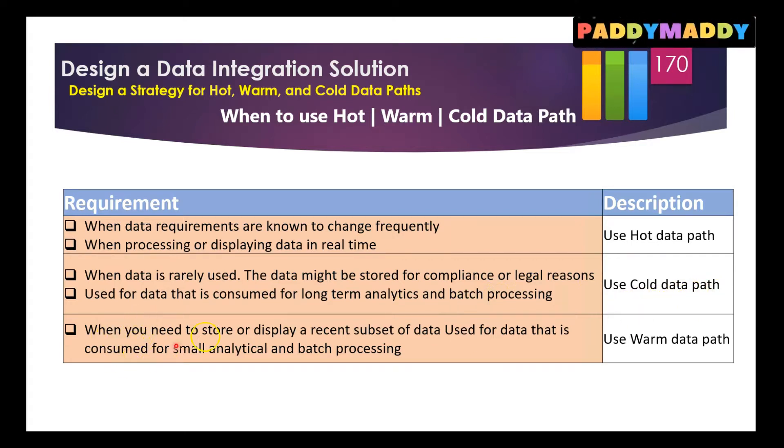When you need to store or display a recent subset of data that's recently used, data that may be consumed for small analytical or batch processing, then warm data. Very frequent or real-time data you would go for hot, and a little slower or just last week's data kind of thing, you would go for warm. But if you want to archive for a longer term and you don't want to use it very frequently, just for the purpose of compliance and legal reasons, then you might be designing that into the cold data path. That's how you're going to use this method.